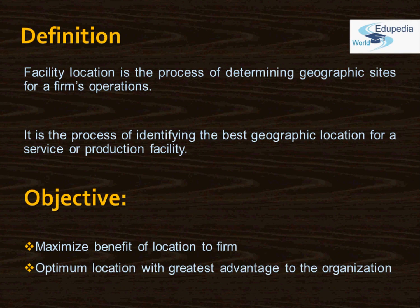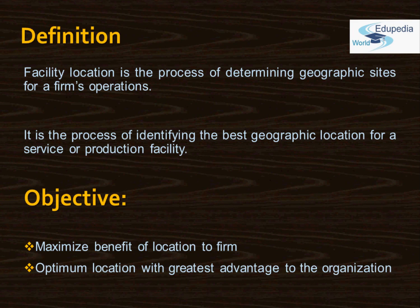So what is facility location? Facility location is the process of determining the geographic sites for a firm's operations. It is about selecting a suitable location or site where the firm or organization will establish its new plant or new facility. In other words, it is the process of identifying the best geographic location for a service or production facility, with the objective of maximizing the benefit of that location to the firm.